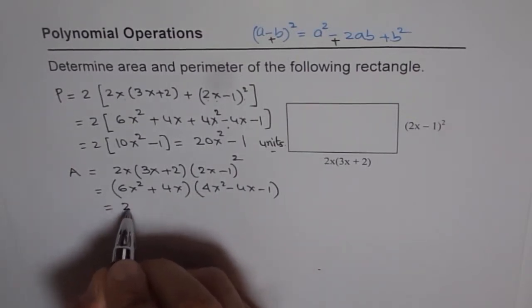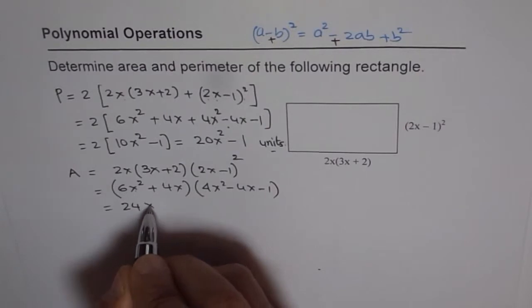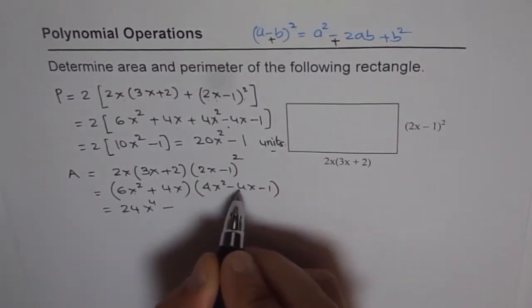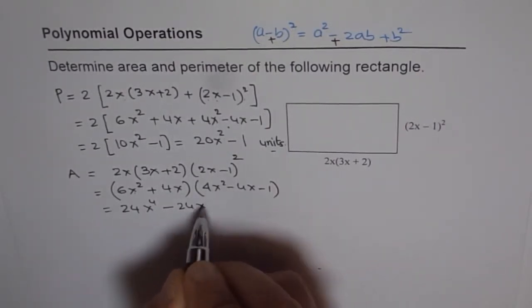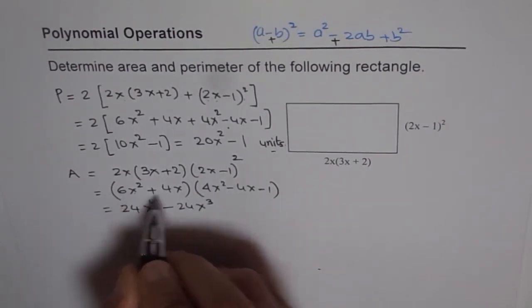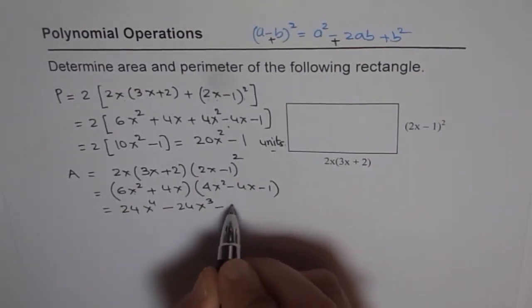6 times 4 is 24, x to the power of 4. Now minus 6 times 4, 24x cubed. Now 6x squared with minus 1 gives us minus 6x squared.